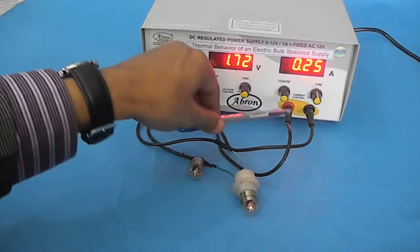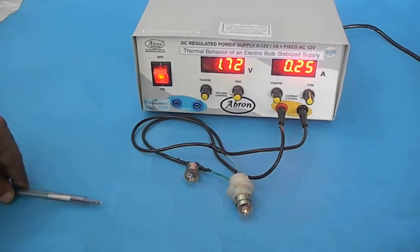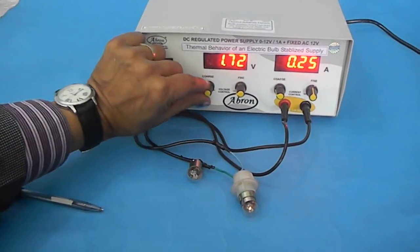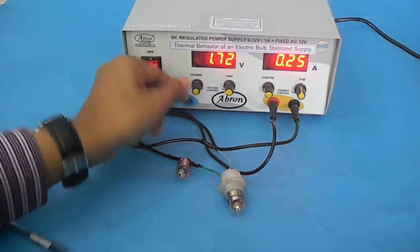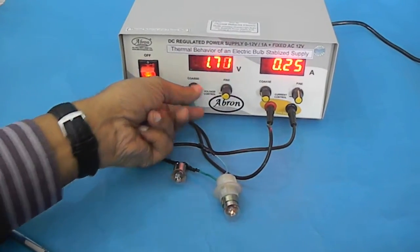I have connected a 6-volt, 6-watt bulb to the DC output. It will consume 1 ampere. If I keep increasing the voltage from 1.6 volts, the light will keep increasing.